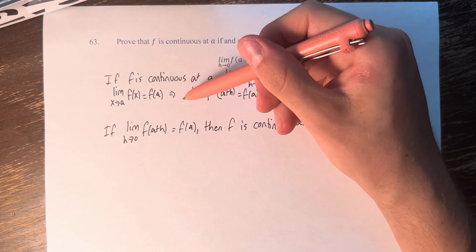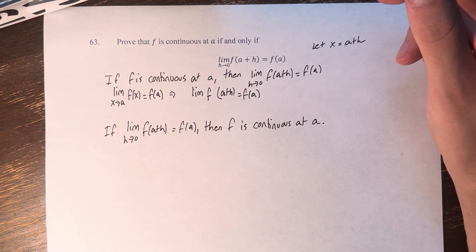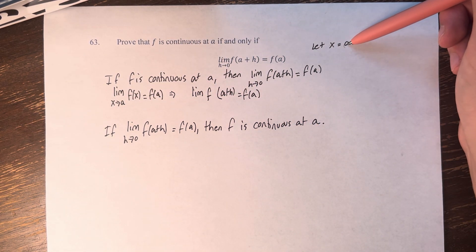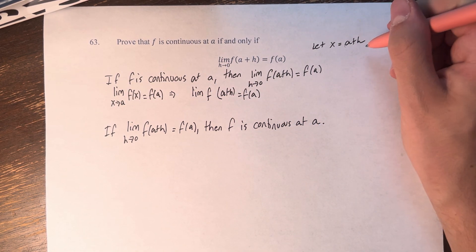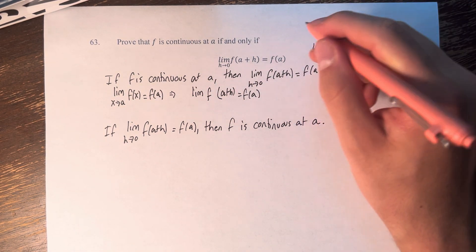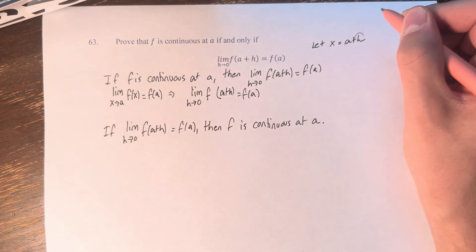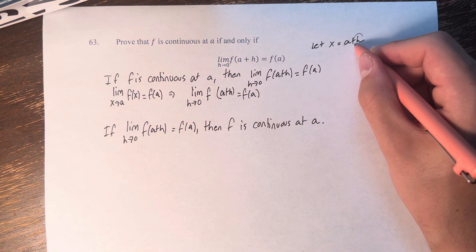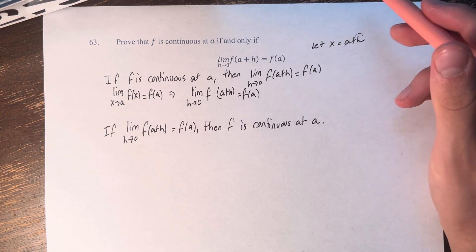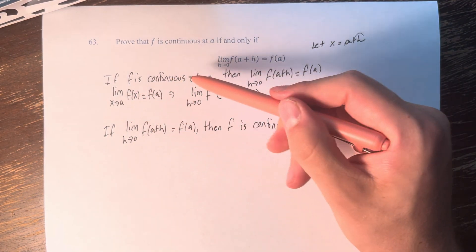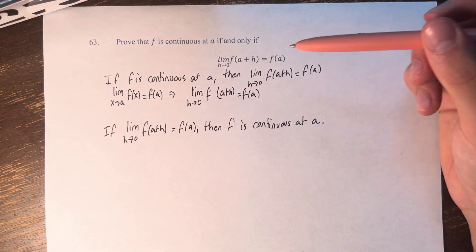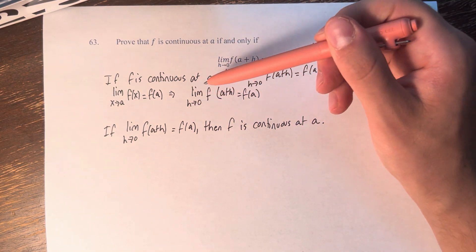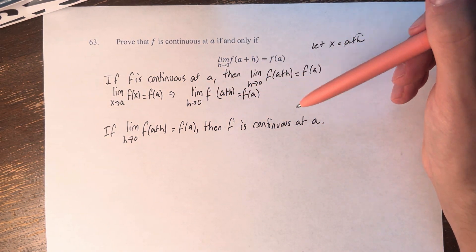The limit as what approaches what? If x is approaching a, that means h is approaching 0. Because for x to be equal to a, h has to actually be 0. Therefore, for x to approach a, h has to approach 0. We've therefore proved that if f is continuous at a, then the limit as h approaches 0 of f of a plus h is equal to f of a.